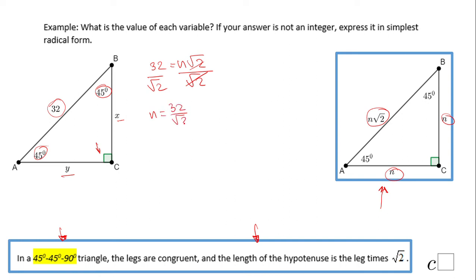I'm going to multiply by square root of 2 over square root of 2. That will give me 32 square root of 2 over square root of 2 times square root of 2, that is 2.